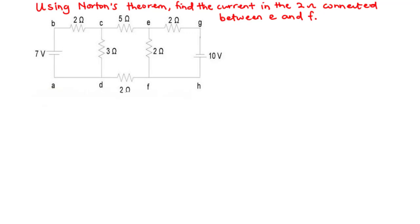If this is a challenge, the best thing to do is to combine Norton's theorem with superposition theorem to find the value of current flowing through the given resistor. The reason is that superposition theorem allows you to consider one source at a time, which reduces the complexity of the circuit. In today's video, we are going to combine Norton's theorem and superposition theorem to find the value of current flowing through the 2-ohm resistor connected between E and F.